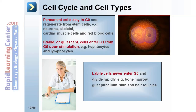Labile cells never enter G0 and divide rapidly. For example, cells of the bone marrow, gut epithelium, skin, and hair follicles are considered to be labile.